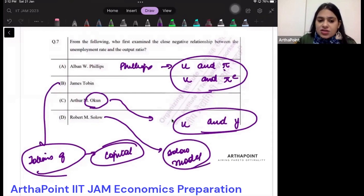So the correct answer to this question is C - we have Okun, who is linked to u and y.